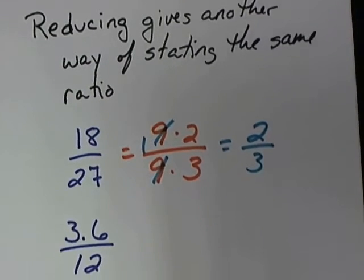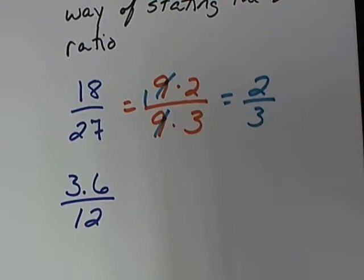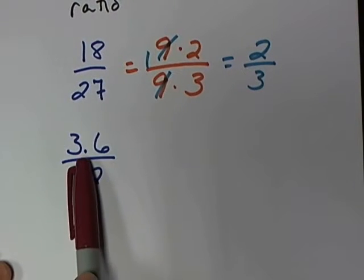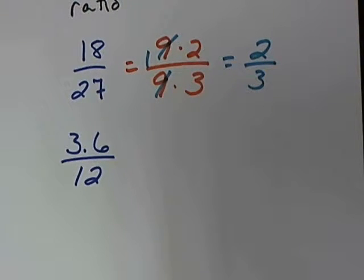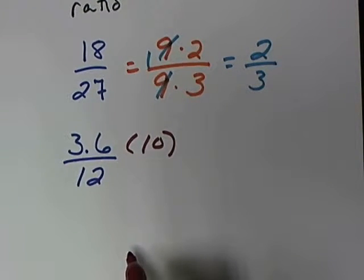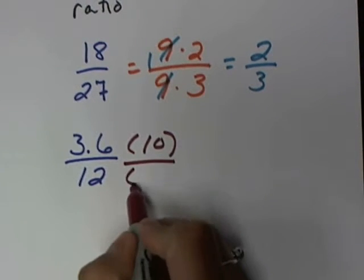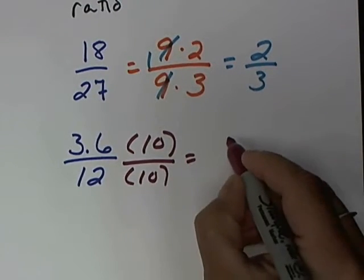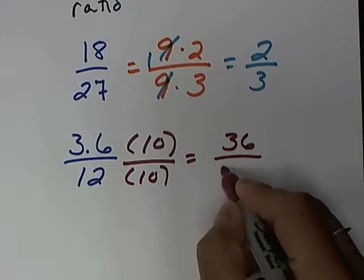We can do that with ugly decimals as well. If I have the ratio of 3.6 to 12, we have a decimal within a fraction. That is the antichrist of math land. So the first thing we have to do is get rid of the decimal in our numerator — we do that legally. To move a decimal point over a spot is just multiplying by 10. So I'm going to multiply the top by 10, and I have to do the exact same thing to the bottom to keep it balanced. This gives me an equivalent ratio of 36 to 120.